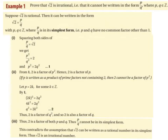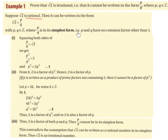What we do is we start off by supposing that root 2 is rational. So, if root 2 is rational, it can be written in the form of p over q, with p and q being elements of the integer set, so with p and q being positive or negative whole numbers, where p over q is in its simplest form, i.e., p and q — the numerator and the denominator — have no common factor other than 1.